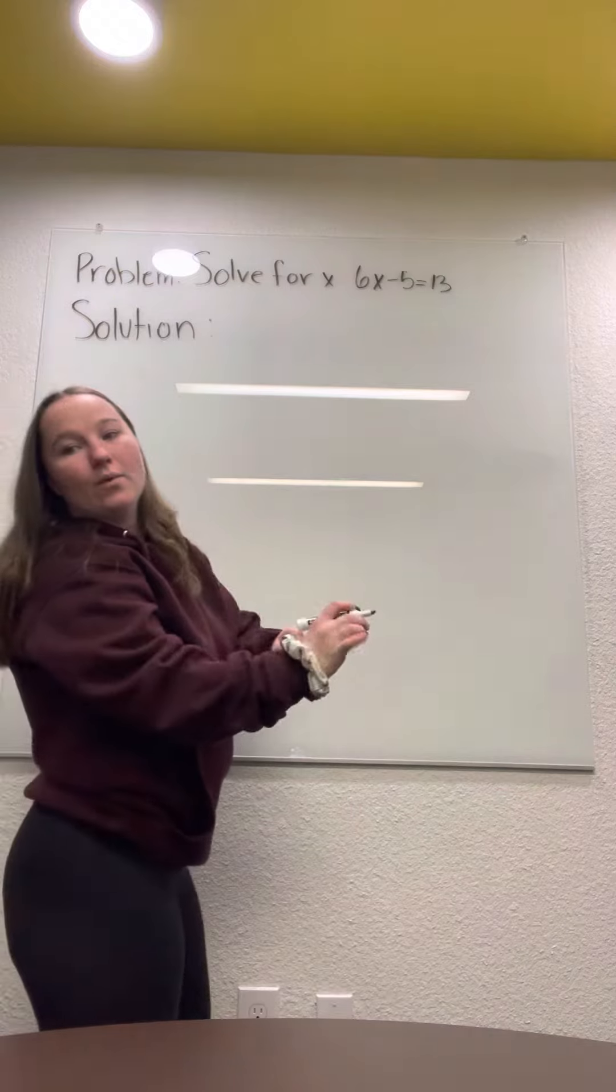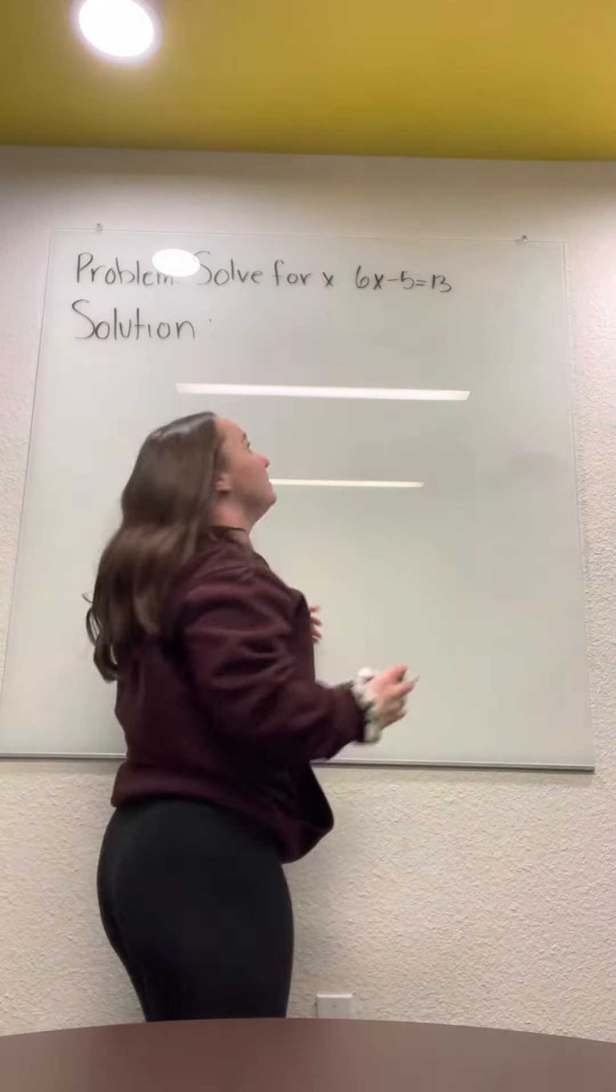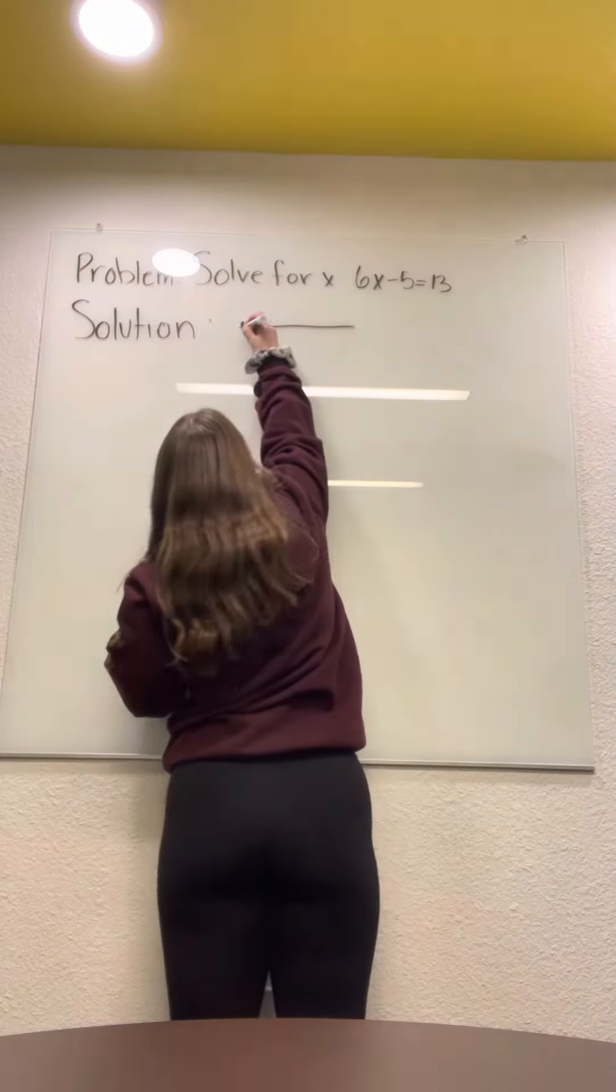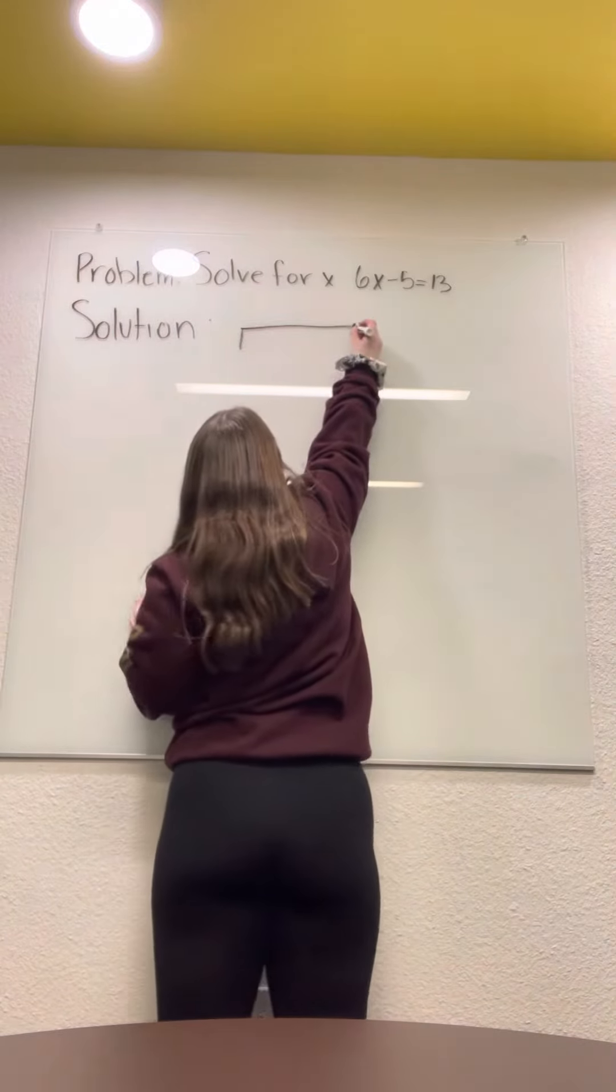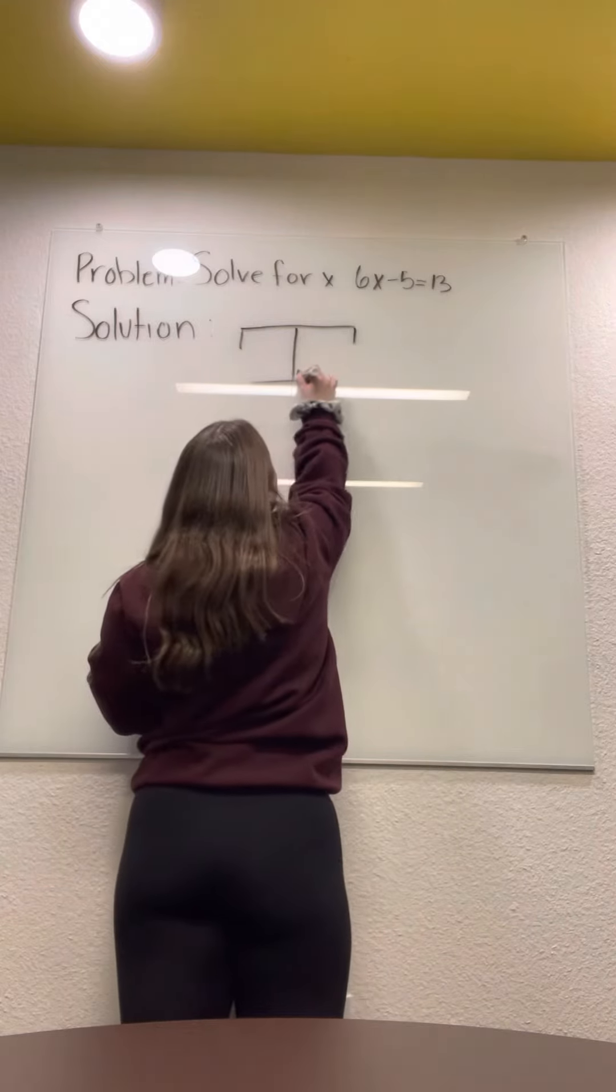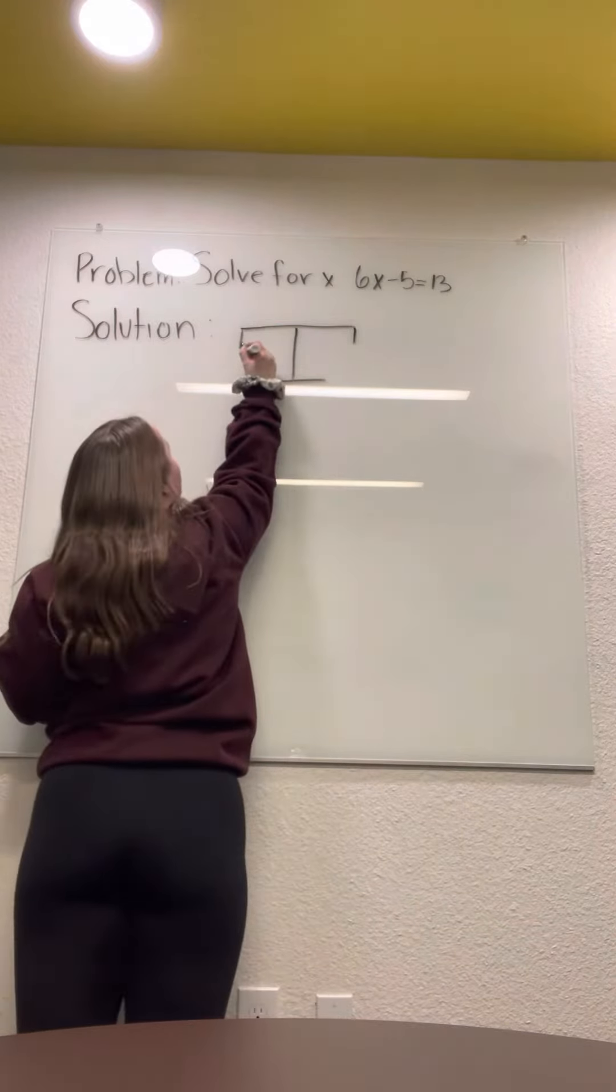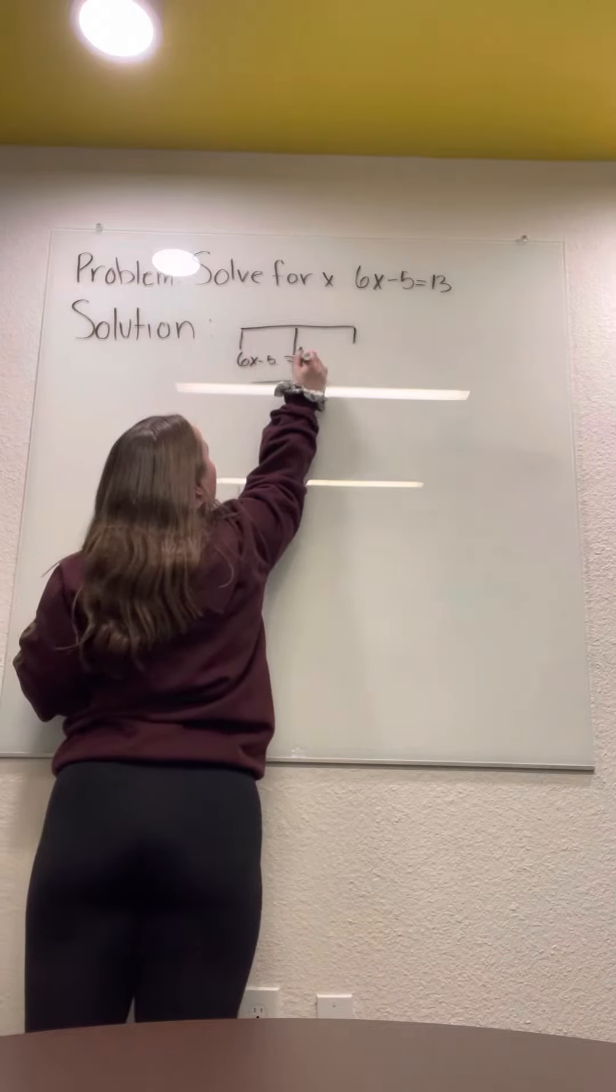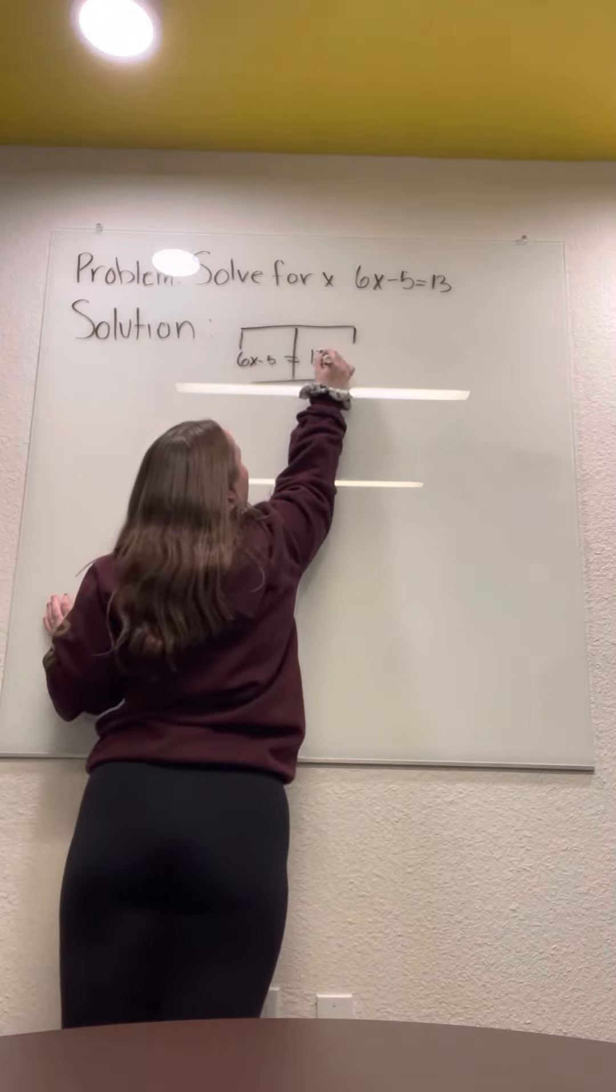So, we are going to split it up into two and we are going to have a little way chart thing. And then we're going to put 6x minus 5 on this side equals 13 on this side.